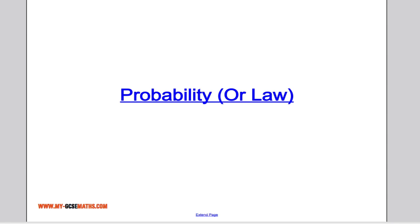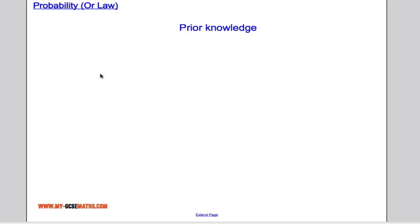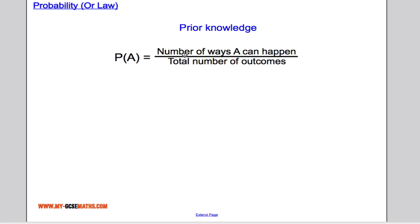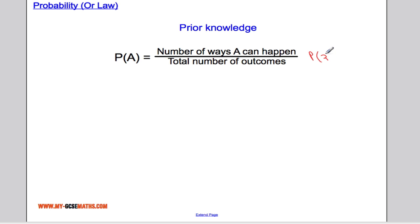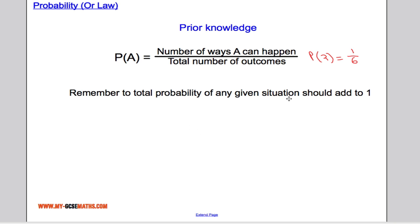The OR law for probability. I'm going to assume some prior knowledge before I crack on with this. First of all, the probability of an event A is the number of different ways A can happen divided by the total number of outcomes. For example, if I was rolling a die and I wanted the probability of getting a two, there's only one way I can get a two and there are six outcomes in total.